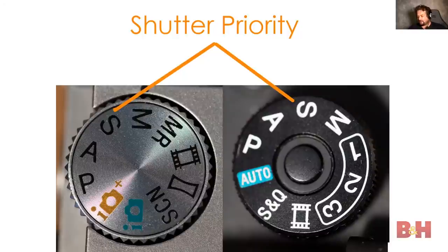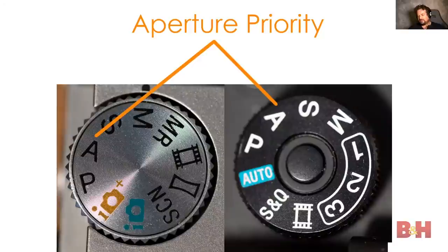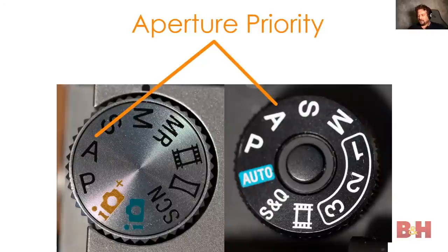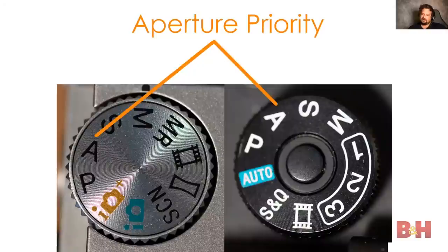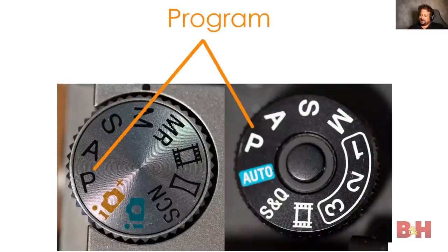In shutter priority, you set the shutter speed and the camera sets the aperture. In aperture priority, you set the f-stop and the camera sets the shutter. Aperture priority is more reliable because there's a much larger range of shutter speeds than f-stops, making it easier to find a correct exposure. I tend to use aperture priority much more than shutter priority — if I'm just walking around the city or traveling, I'm mostly in aperture priority.